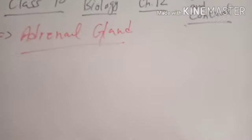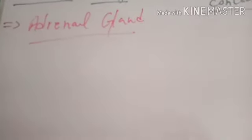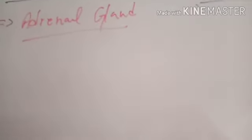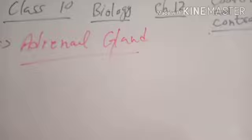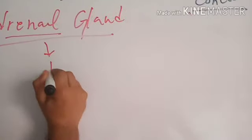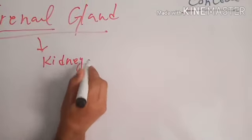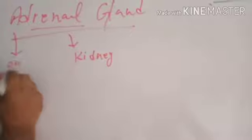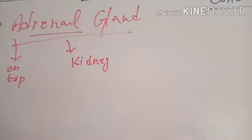Our next topic is Adrenal Glands. Ad means attached to or related to or on the top of. Adrenal means kidneys. Gland means endocrine gland.